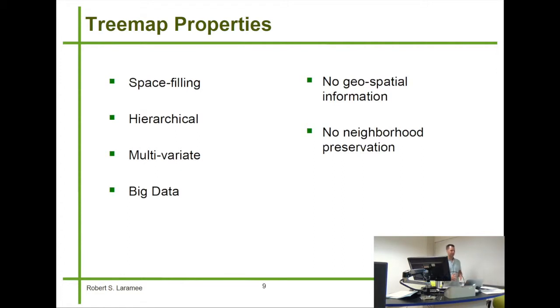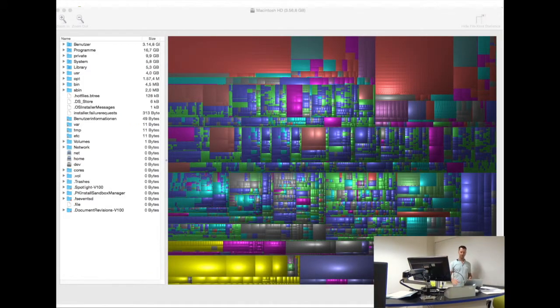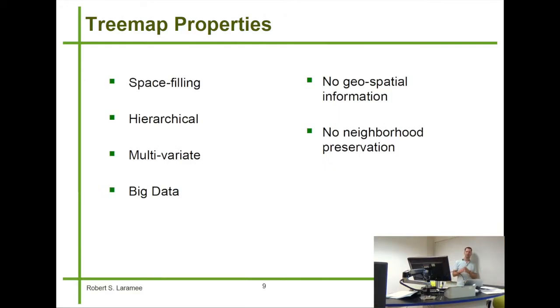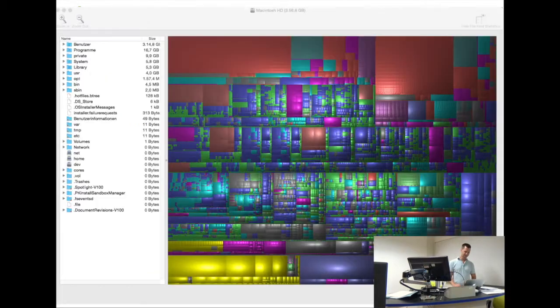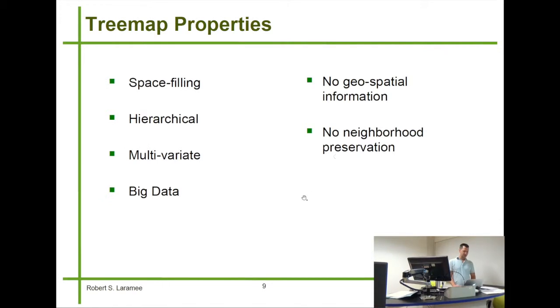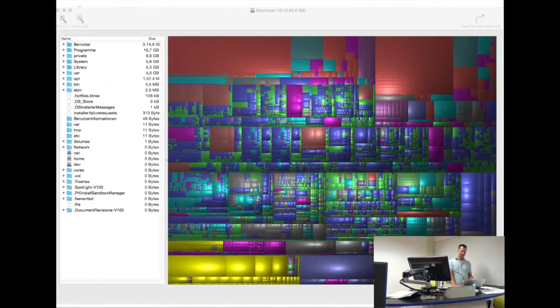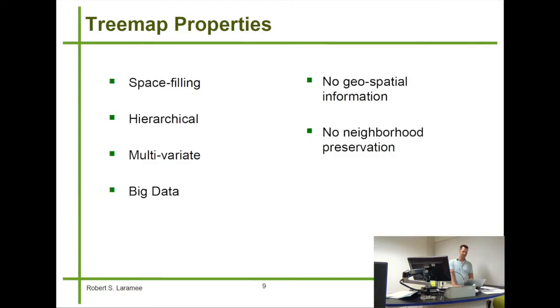So, what are these good for? Basically, they take the existing space, like in this example, and they fill it up. So, we call them space filling. They represent hierarchies. You can actually move up and down the hierarchies interactively. They can represent multivariate data. In this case, the color represents different kinds of files, like user-generated files, program-generated files, operating system-generated files, music files, those sorts of things. They also apply to very large data sets. So, I can see thousands of files sitting on my hard drive in a second. They don't encode any geospatial information, and they don't preserve neighborhoods. That's not very important.